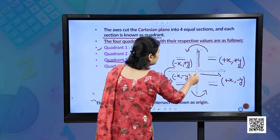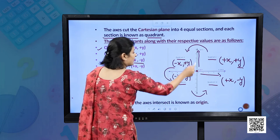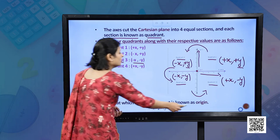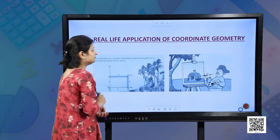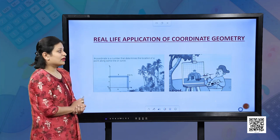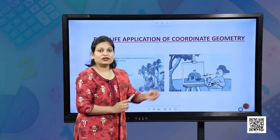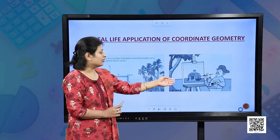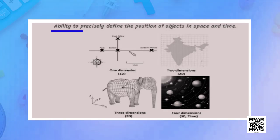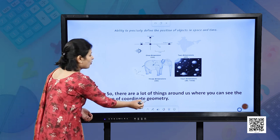Where does the point origin come? When the two lines — the x-axis and y-axis — meet at a point, that point is known as the origin. Now, what are the real-life applications of coordinate geometry? A coordinate is a number that determines the location of a point along some line or curve. A painter can use coordinate geometry in painting a picture. Also, coordinate geometry is used to define the position of objects in space and time.